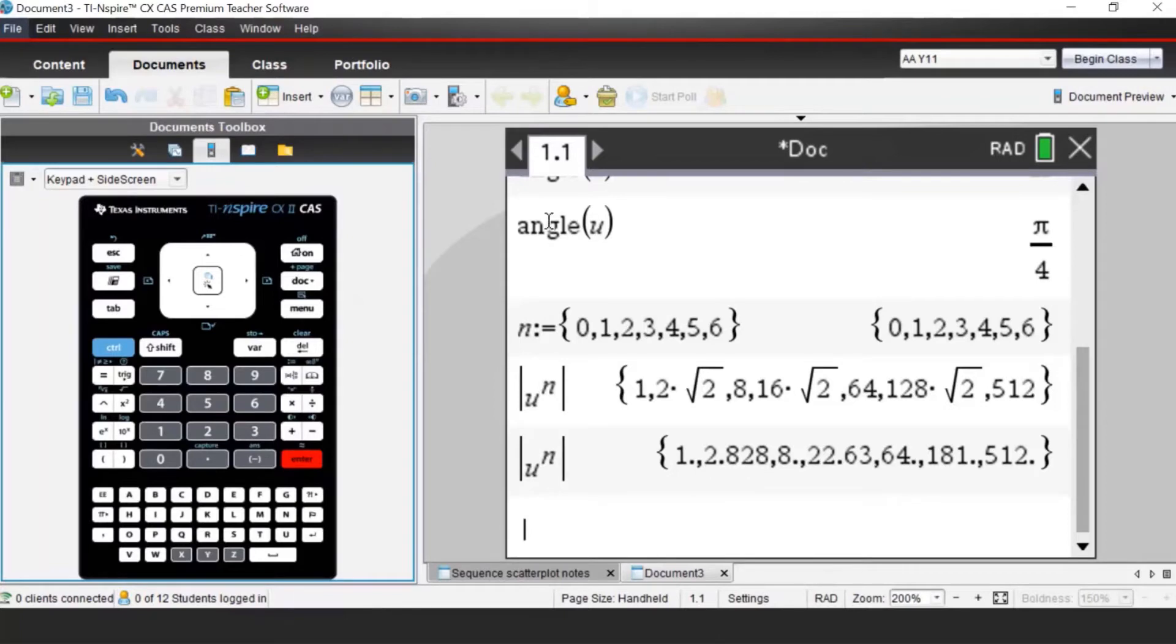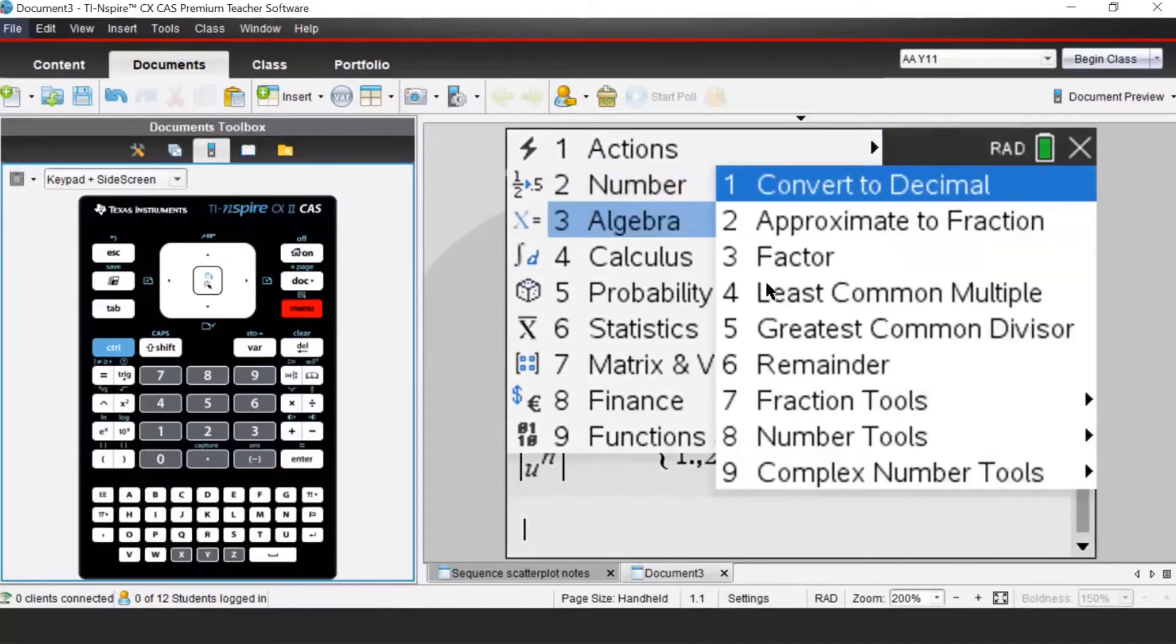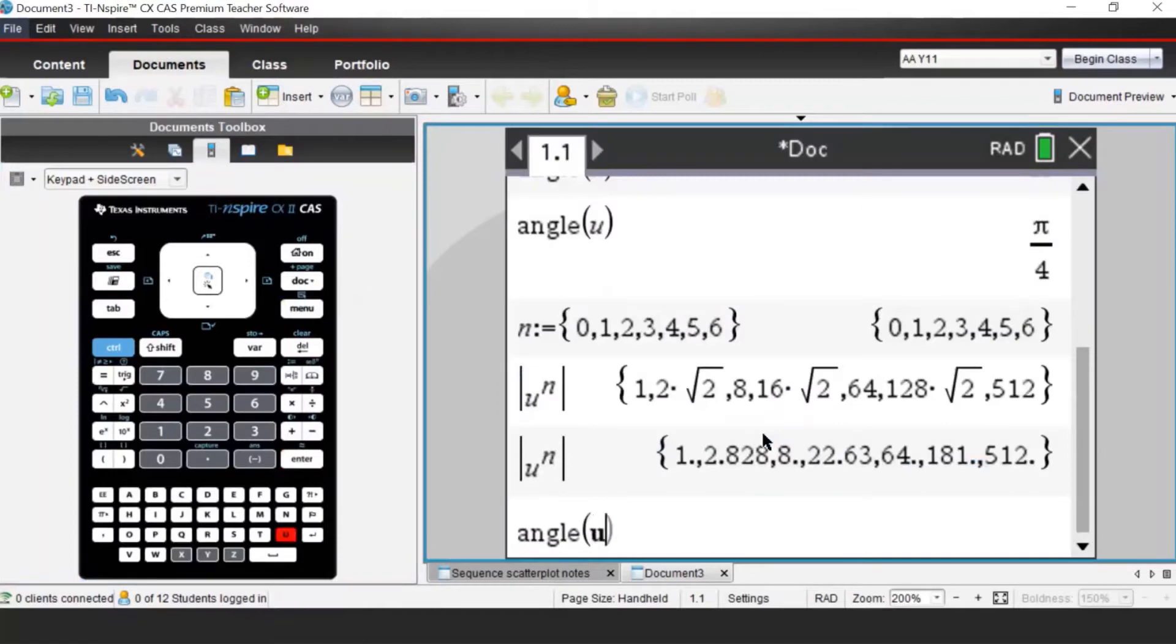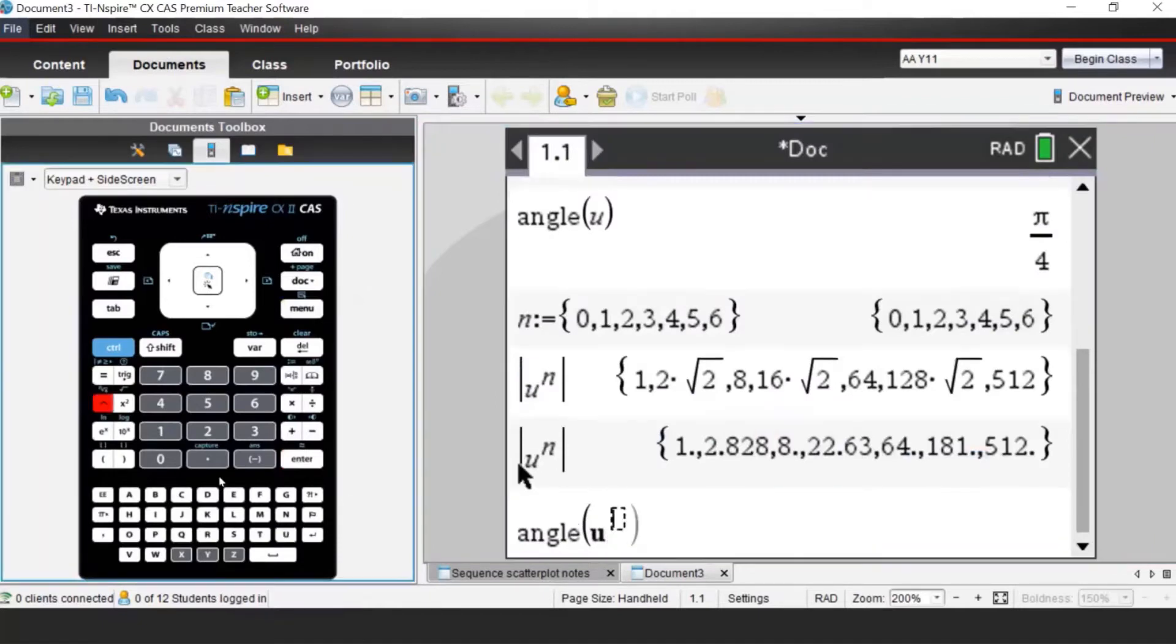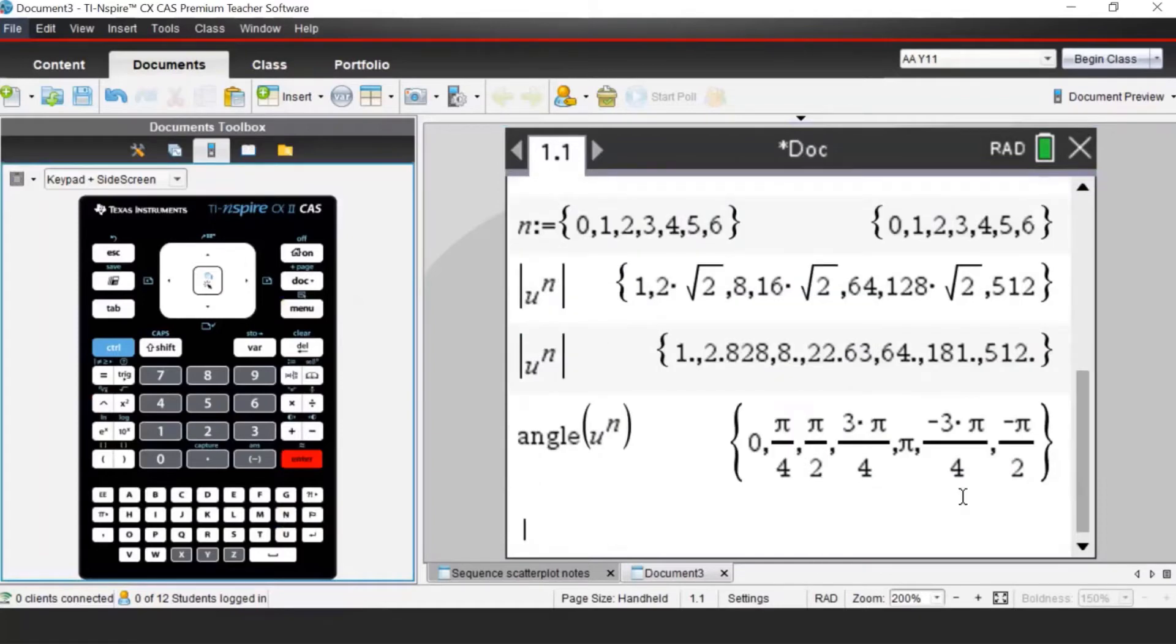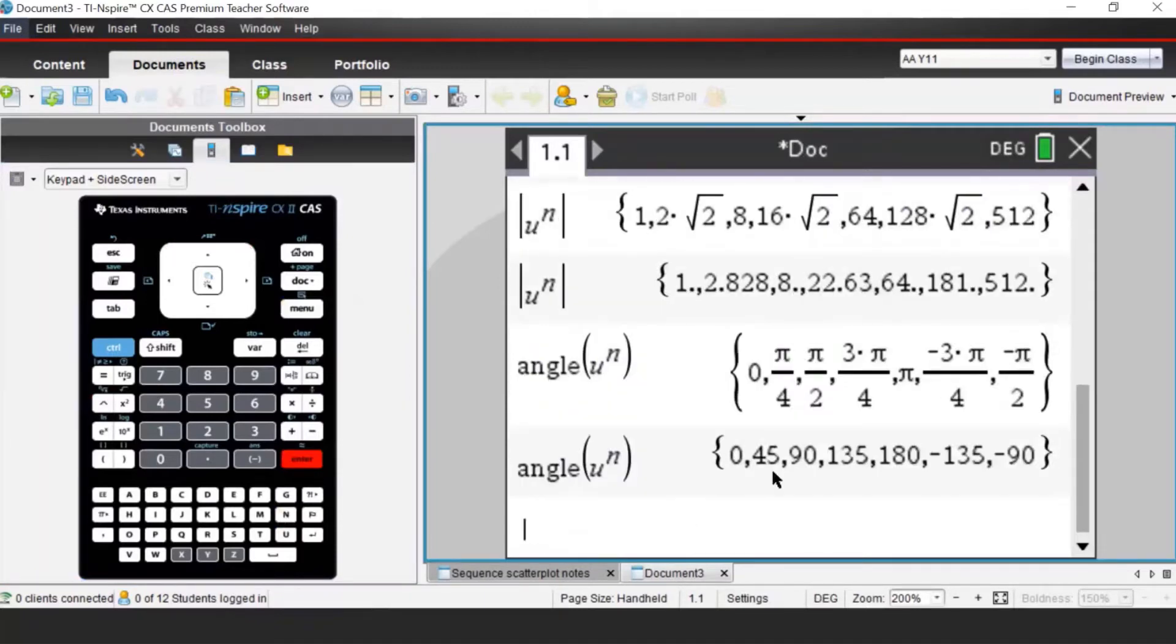I can do a similar thing for angle. If I go again menu number, complex number tools, and polar angle, but this time I will try all the angles from U to M. I can see those angles in radians, and alternatively, I can also see those angles in degrees.